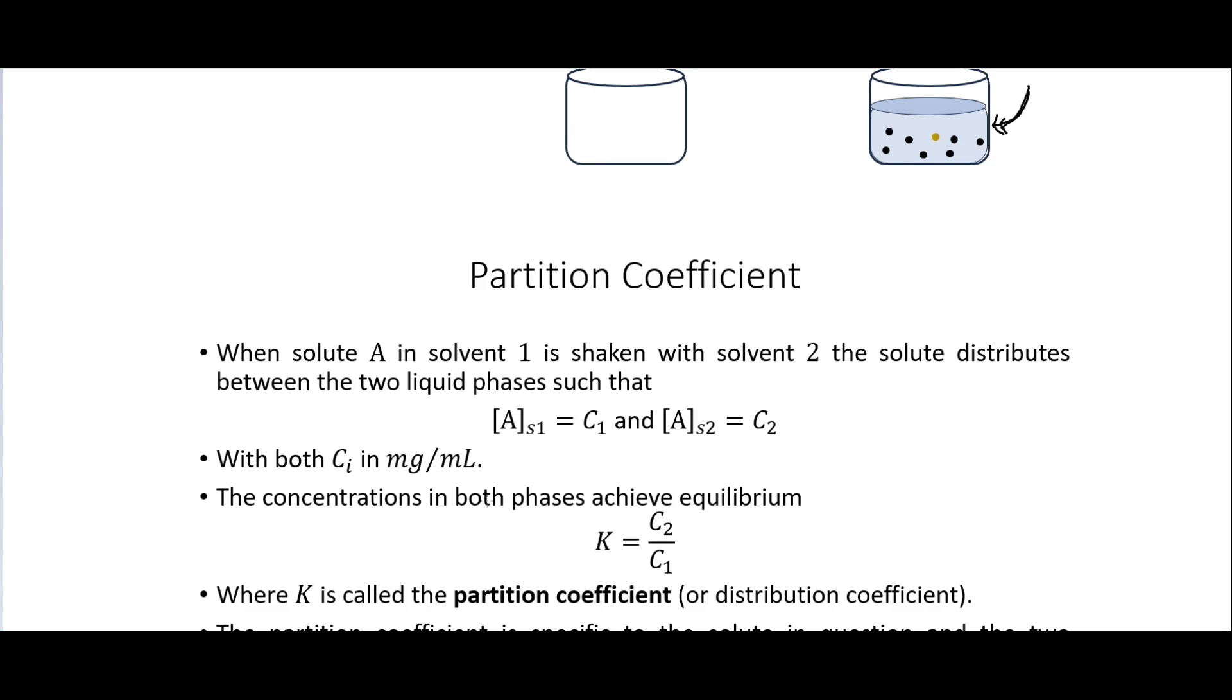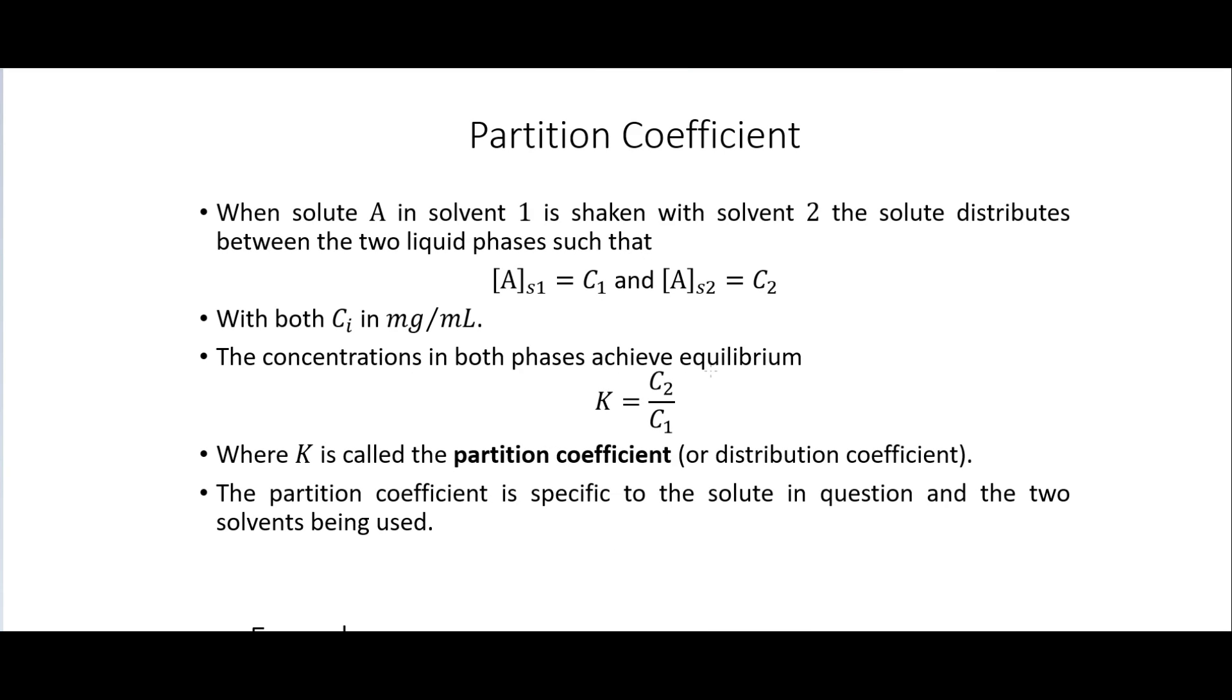And so this is using the partition coefficient which I've already talked about in several other videos. So just to quickly go through it here. So if we have a solute A in solvent 1 and it's shaken with solvent 2, then the solute distributes between the two liquid phases such that we end up with the C1 here in the solvent 1 and C2 here in the solvent 2. And then this is our partition coefficient here which is just the ratio of those two concentrations. And so that's going to determine which of the solvents the solute ends up going into.